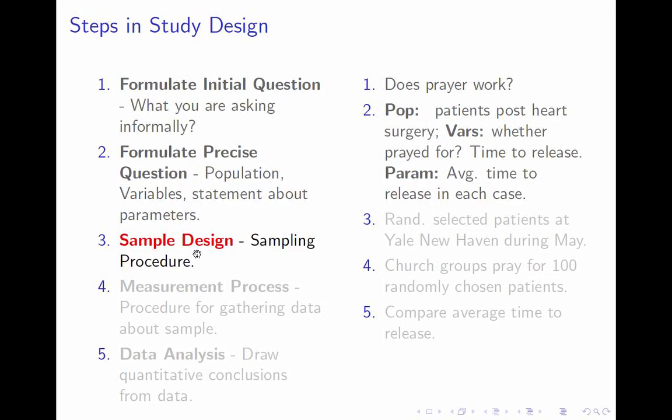The next step is the sampling procedure. We need to do something realistic among all heart patients. We're going to randomly select 200 people from among patients who received heart surgery at Yale New Haven Hospital during May. Notice that although we're randomly selecting from that group, it is still not a random sample of the full population — we only sampled from one hospital one month. Our population is all post-heart-surgery patients. So there's potential for bias: we would have to argue there's some way patients at Yale New Haven or in May recover faster or slower than others.